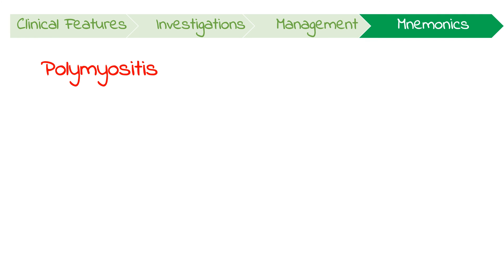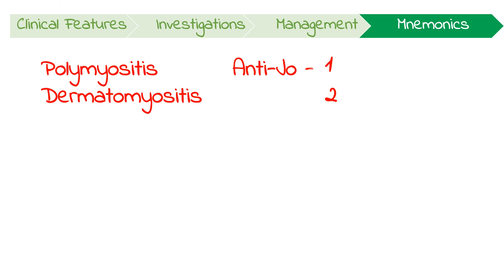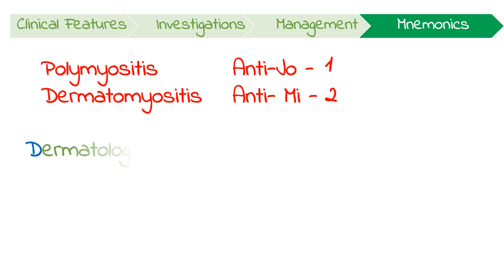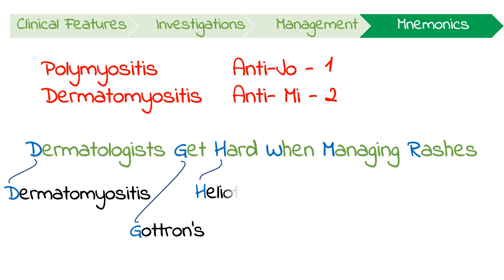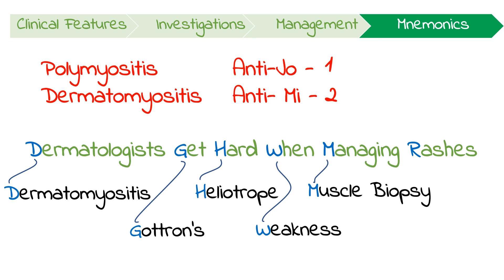I remember all of this by thinking that polymyositis and dermatomyositis are one, but kinda two diseases. That makes me remember that the autoantibodies are anti-JO1, but also anti-ME2. I also remember this phrase: 'dermatologists get hard when managing rashes.' This helps me to remember that dermatomyositis presents with Gottron's papules, a heliotrope rash, and proximal weakness. It's investigated with a muscle biopsy and can progress to respiratory involvement too.